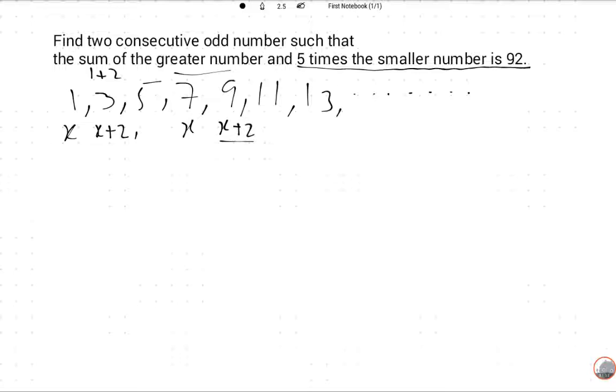This is how we find consecutive odd numbers. Now the main part of this question: there are two odd numbers. The first odd number is the smaller number, which we'll suppose is X. The second or greater number will be X plus 2.